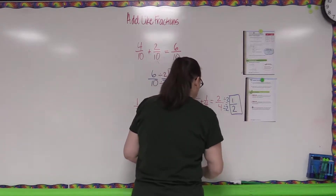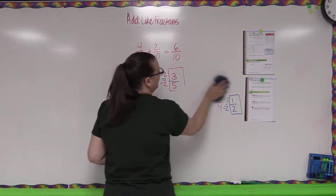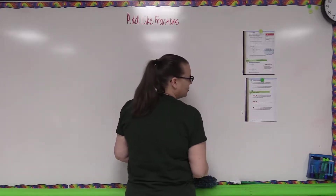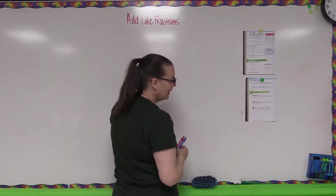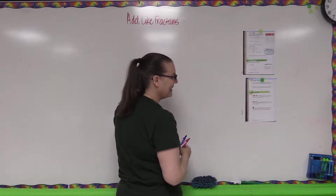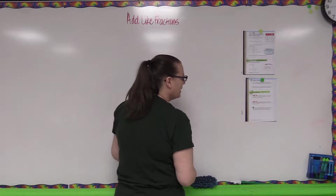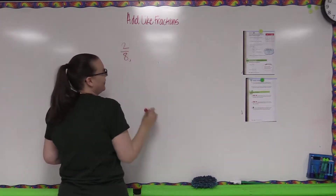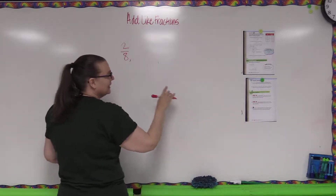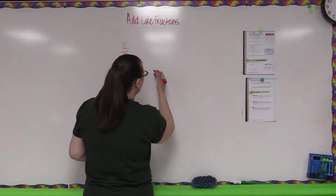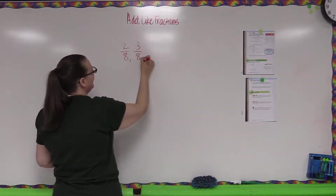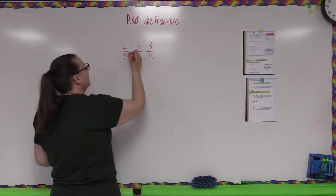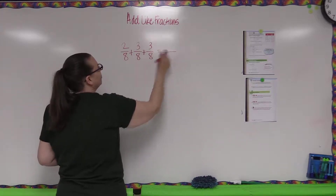Let's try number 17, a brain builder. It says: it rained two-eighths of an inch in the first hour, then three-eighths of an inch each hour for the next two hours. Find the total rainfall. So the first hour was two-eighths, and then it rained three-eighths again and three-eighths again. All together means we're adding these three amounts.